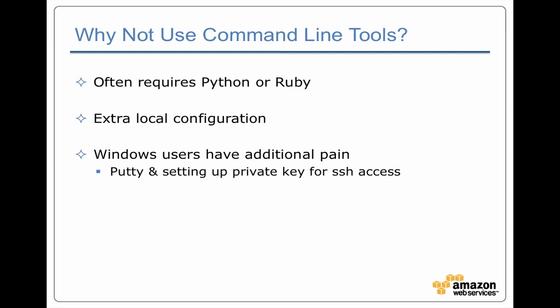Now the downside is these tools are generally written in scripting languages — Python or Ruby — which means you've got to have Python and Ruby installed on your machines. You do have to do extra work to configure them. And if you're a Windows user then anything involving SSH has extra pain and suffering, like using PuTTY as your terminal window requires work to take the private key file from Amazon and install it properly. So in general the web browser is faster and easier to get started with, but command line tools are more powerful and give you extra functionality.